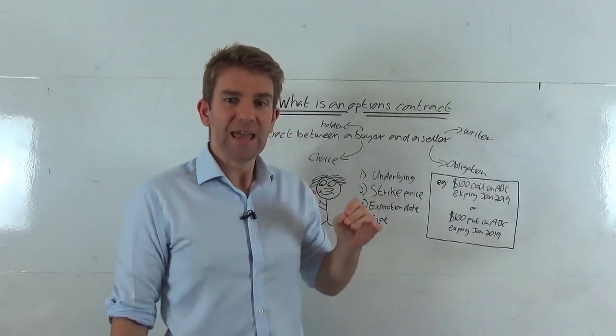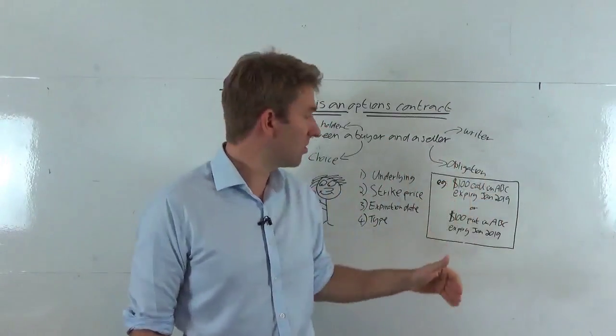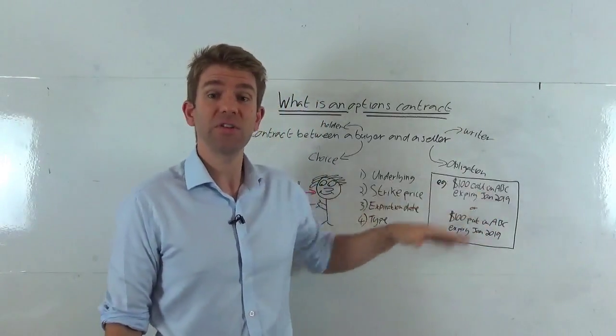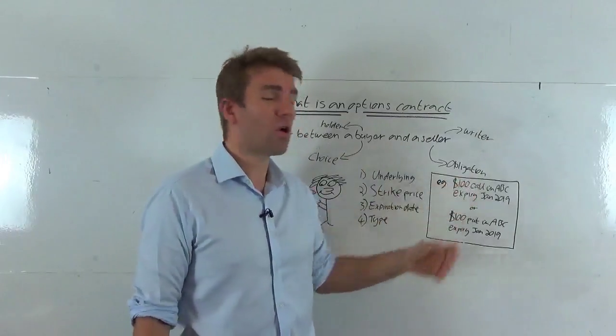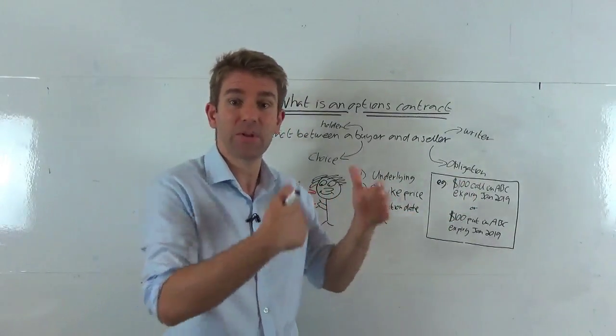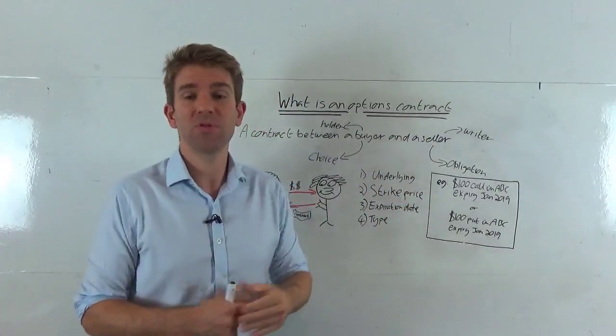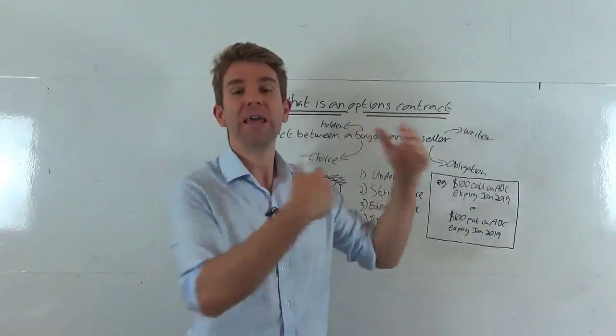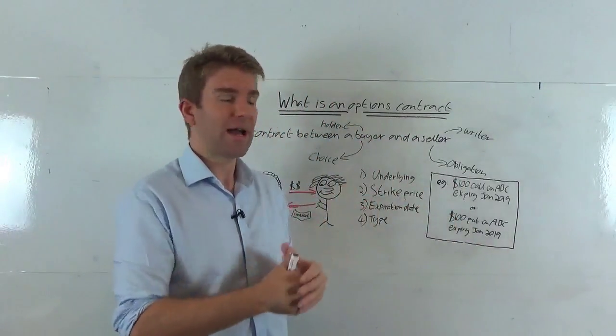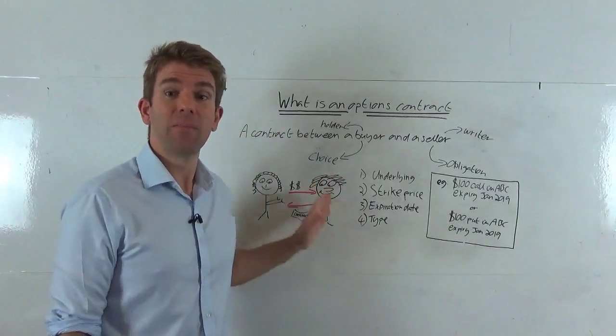So in other words, if the price of ABC stock is $120 in January, 2019, this guy's happy because he's got the option to purchase that stock and it'd be the amount of contracts he buys. Well, again, we'll go into more depth about that later, but the amount of contracts he buys, but he's happy because he's going to exercise the option. So, yeah, I'll take that. Thank you very much. Here is my money and you're giving me stock at $100. So in that case, the seller wouldn't be very happy. The buyer would be very happy.